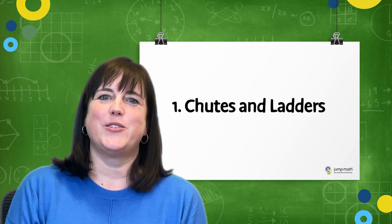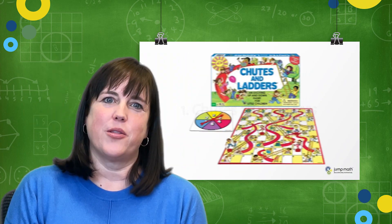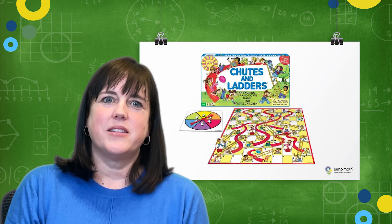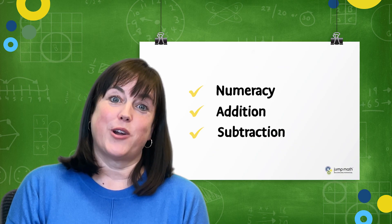Our first one is Chutes and Ladders. It shows every number 1 to 100 on the board. Players climb and slide up and down with each roll. This is a great way to promote numeracy and addition and subtraction.